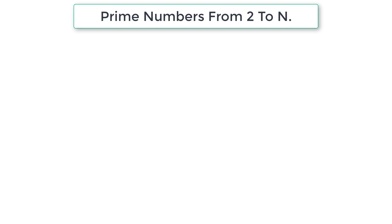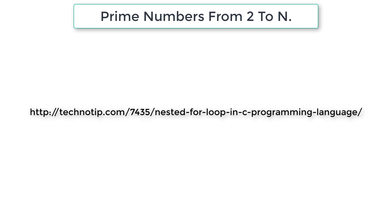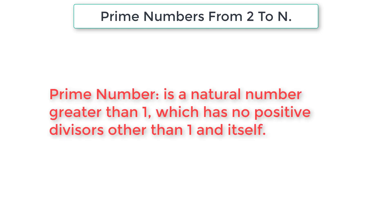Let's write a C program to print all the prime numbers between 2 to n, n being a user-entered number. We will be using nested for loops in this program. A prime number is a natural number greater than 1 which has no positive divisors other than 1 and itself.